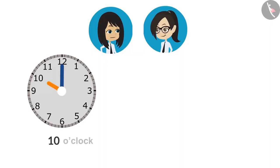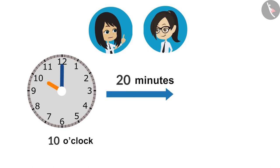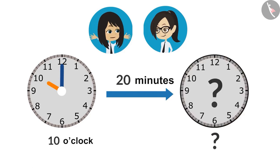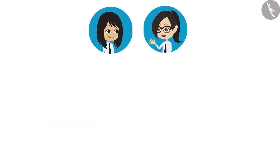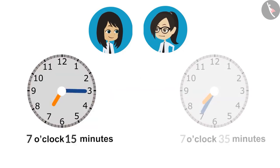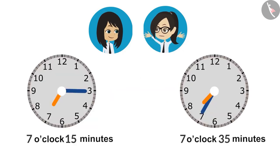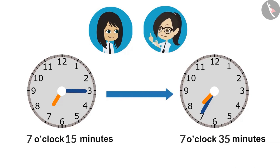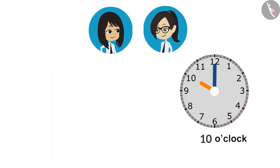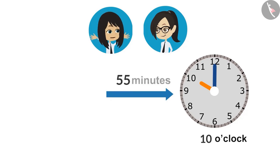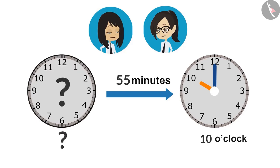First, if the start time of a task is known and how much time it will take to complete the task, we can tell the end time of the task. Second, if the start time and end time of a task is known, then we can tell how much time it will take to complete the task. And third, if the end time and how much time it will take to complete the task is known, then we can tell what was its start time.